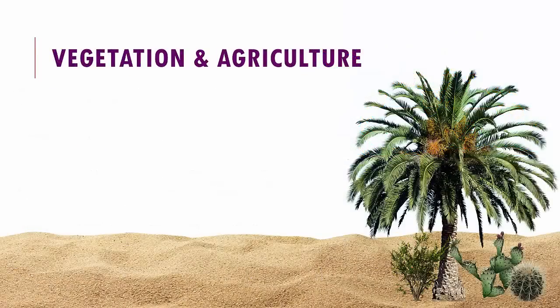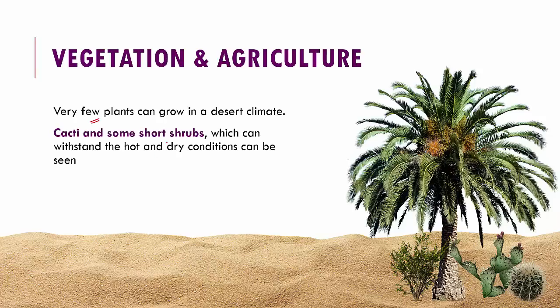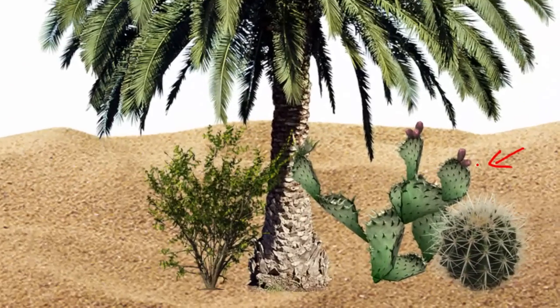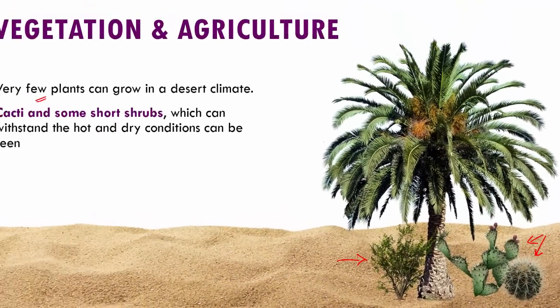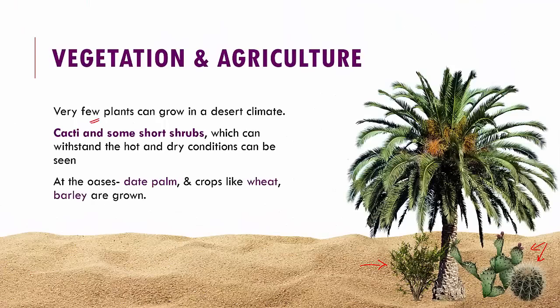In the desert, very few plants can grow. Only plants that can withstand very hot and dry conditions can survive, such as cacti and certain short shrubs. Where there is an oasis and fertile land, plants like date palm grow, and crops like wheat and barley are cultivated around the oasis.